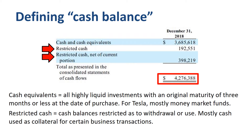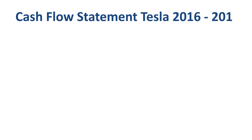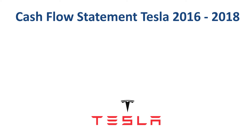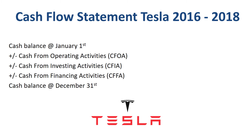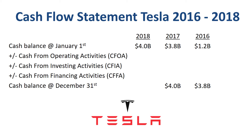How did this total cash balance develop over the past three years? Looking at the relationship between cash balance and cash flow from the start of 2016 to the end of 2018, with 2016 on the right and 2018 on the left: Tesla started 2016 with $1.2 billion in cash and ended the year with $3.8 billion. That cash balance further increased to $4 billion by end of 2017, and $4.3 billion by end of 2018.